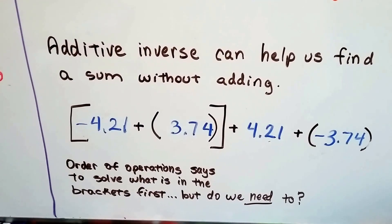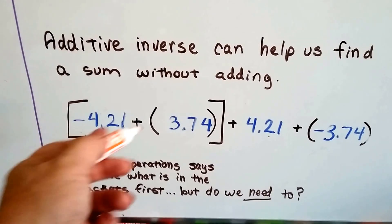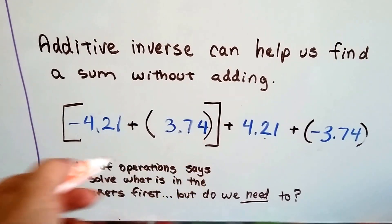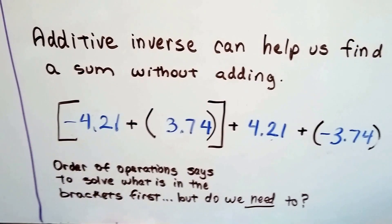Now, order of operations says to solve, we need to do what's in the brackets first. This side, what's inside of these brackets, these boxes. But do we really need to? Do you see what I see?